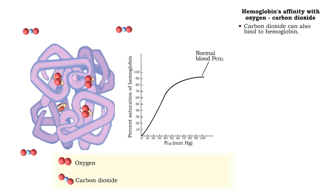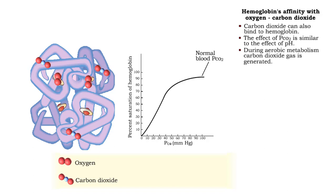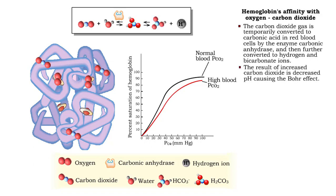Carbon dioxide can also bind to hemoglobin. The effect of carbon dioxide partial pressure is similar to the effect of pH. During aerobic metabolism, carbon dioxide gas is generated. The carbon dioxide gas is temporarily converted to carbonic acid in red blood cells. The result of increased carbon dioxide gas in the blood is a lowered pH, causing the Bohr effect.